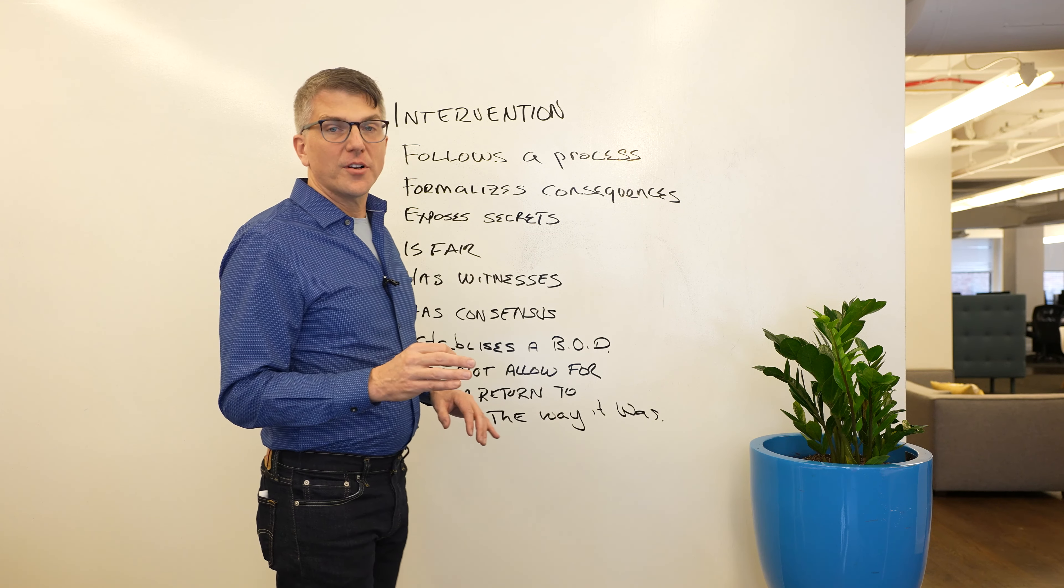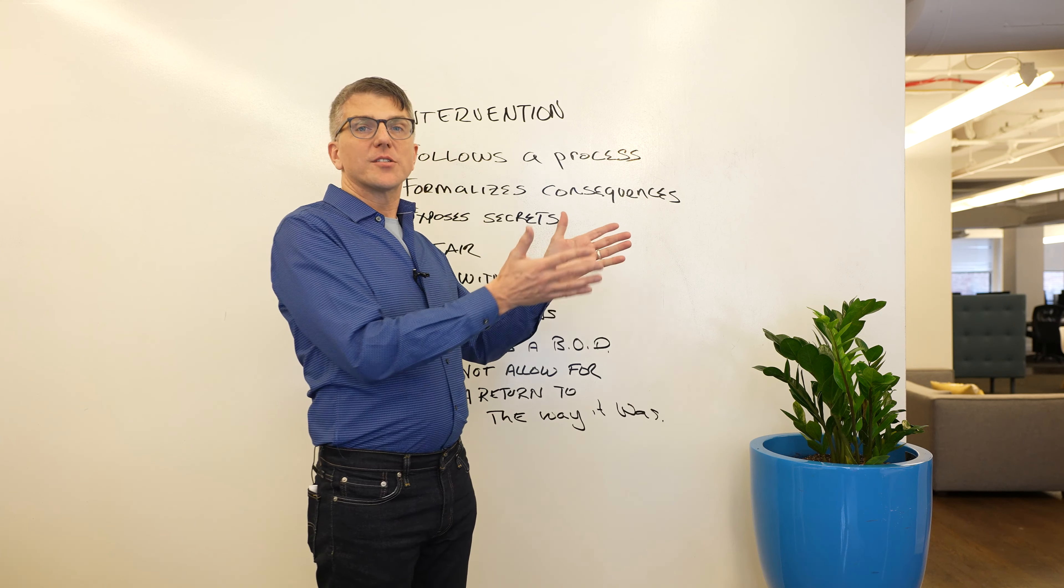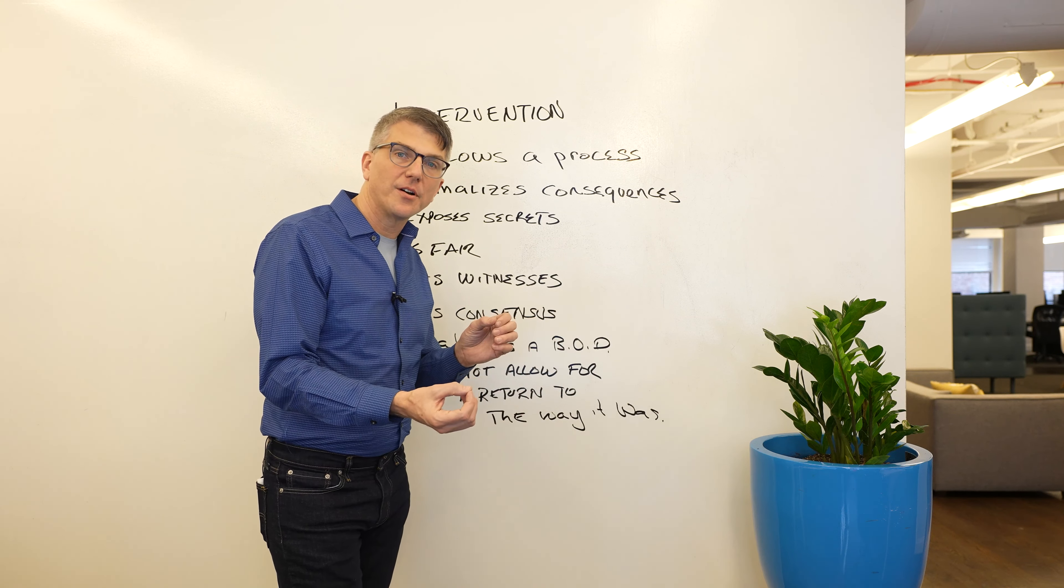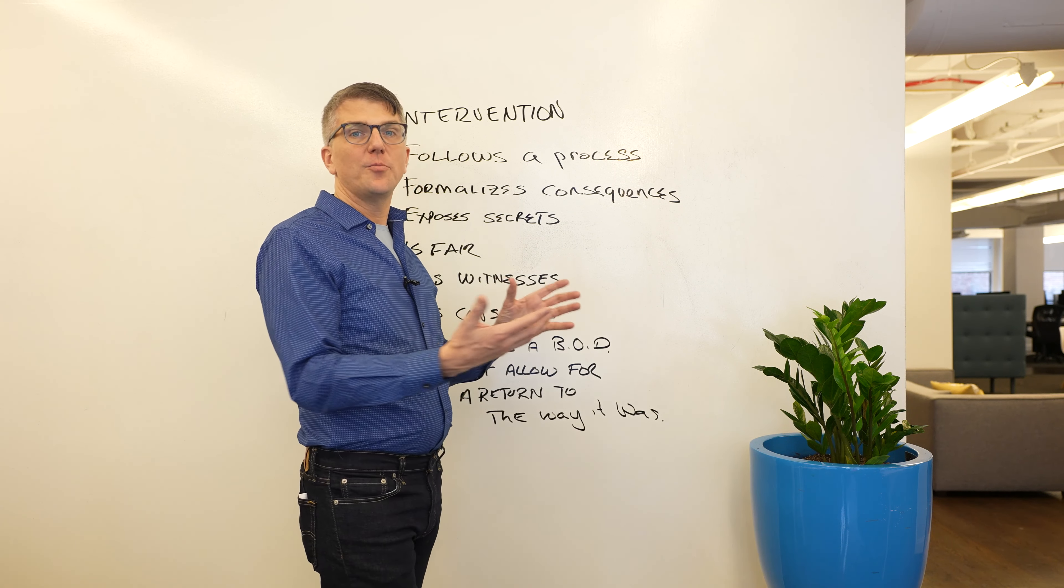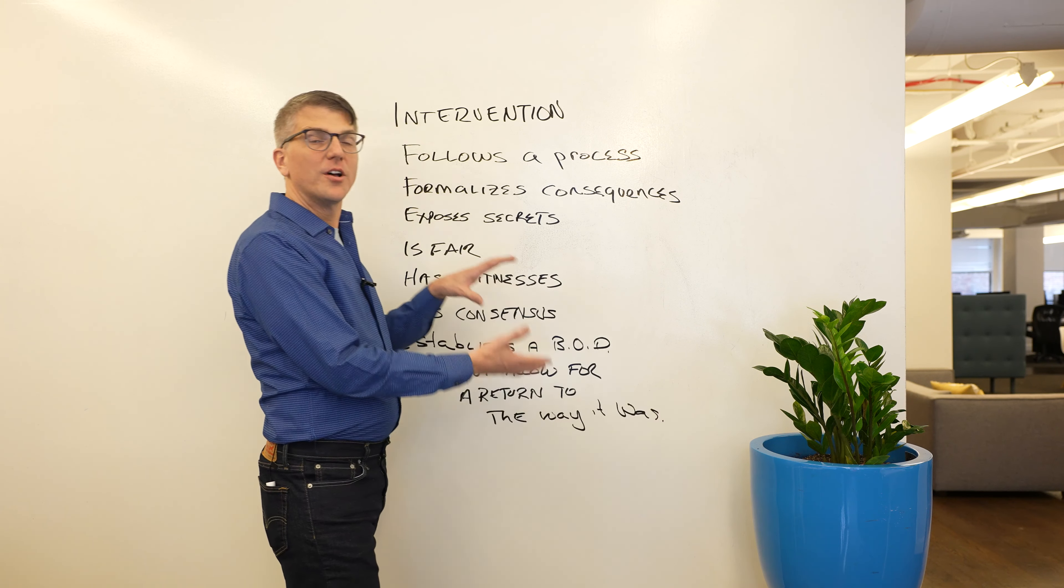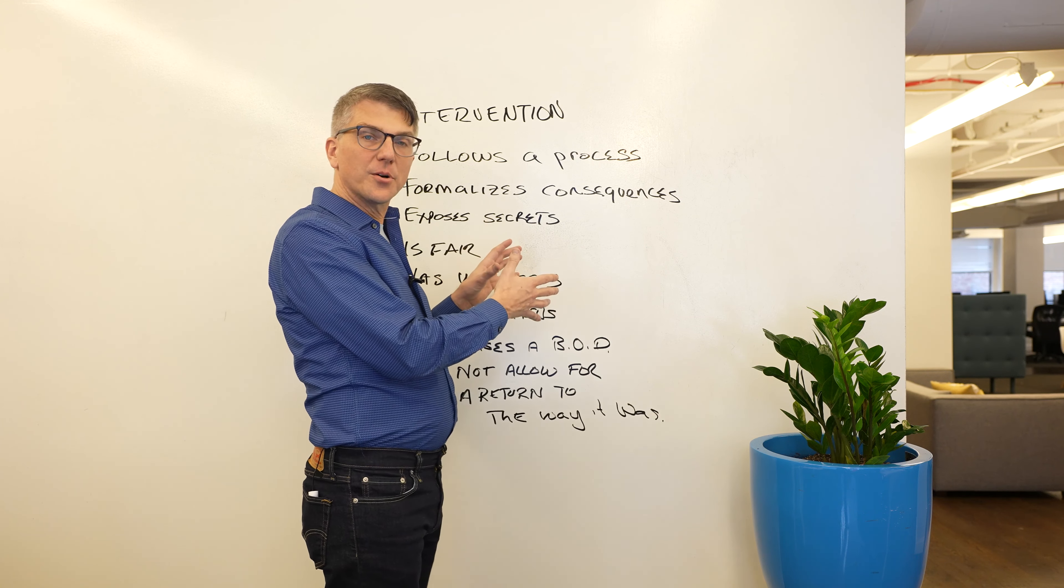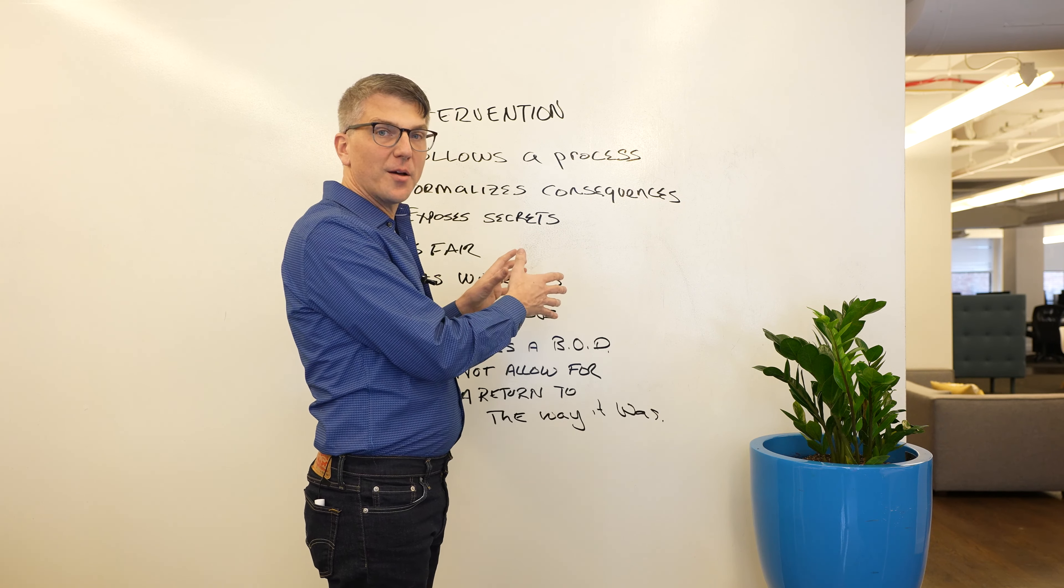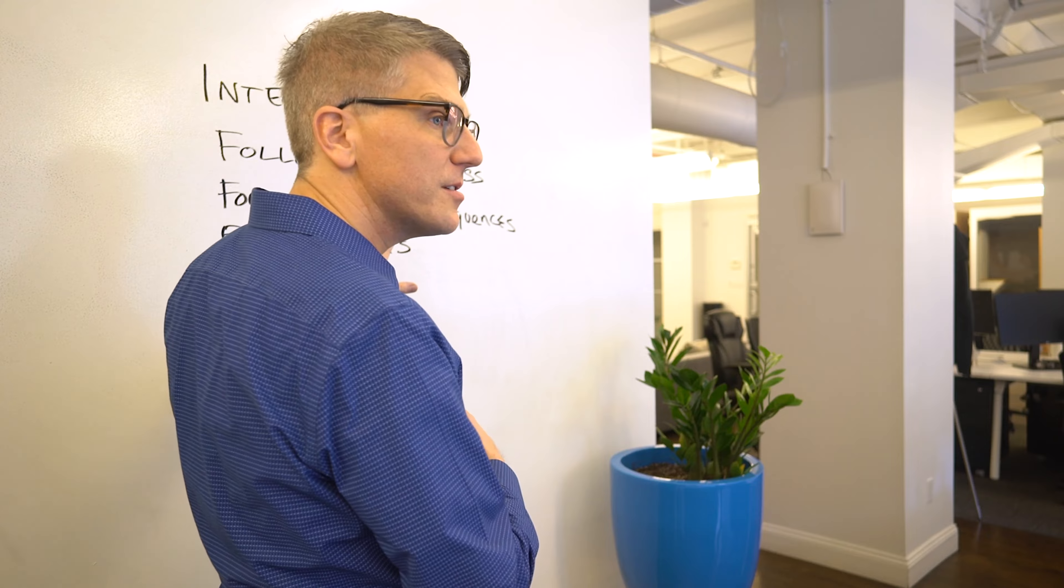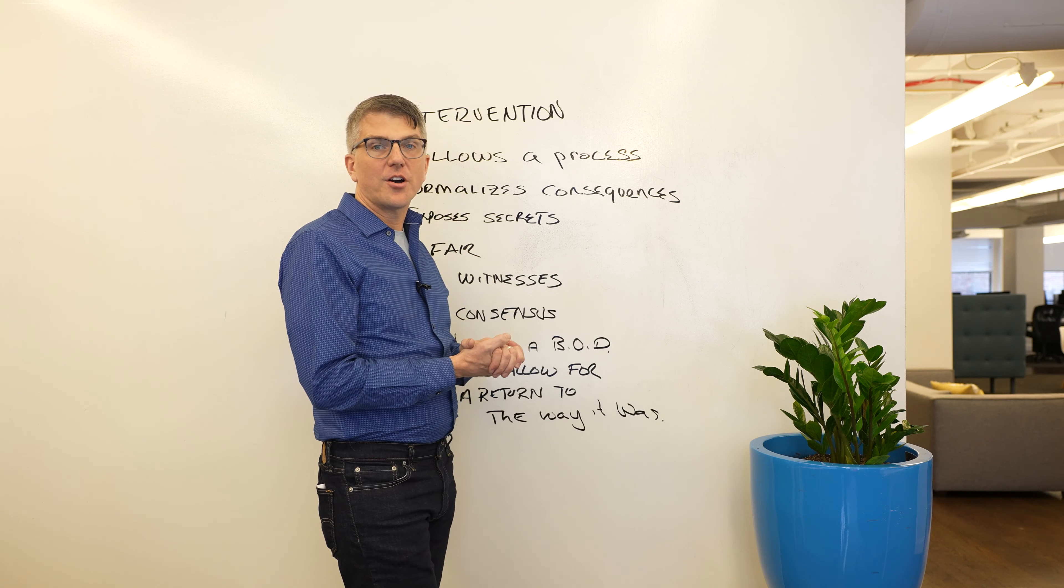Very importantly, an intervention, that moment in time, doesn't allow us to go back to the way it was. We're creating a new path forward, a new plan for the person of concern, and a new path for the family. After intervention, we're never going to allow the situation to go back to the way it was. We're going to have a new plan. We're going to invite the person of concern to be a part of that plan. If they don't want to be a part of that plan, there will be consequences. If they do want to be a part of that plan, we're going to encourage them to recover over the long term.